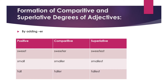Now we will see the formation of comparative and superlative degrees of adjectives. The easiest way is by adding '-er' and '-est'. For example: sweet, sweeter, sweetest; small, smaller, smallest; tall, taller, tallest. Can you write down some more adjectives that can be converted into comparative and superlative degrees by adding '-er' and '-est'?